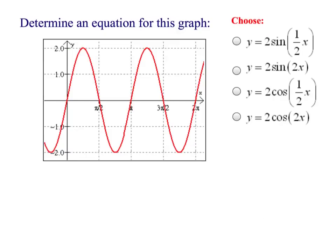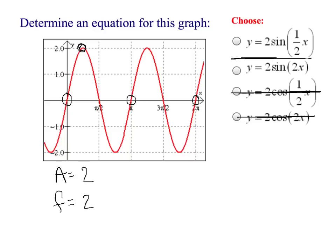In the second example, the curve starts right at the origin, so it has to be the sine function — we eliminate C and D instantly. The height is 2, so amplitude is 2. I see one cycle completed at pi and a second cycle at 2 pi, so frequency is 2 as well. That means I jump on choice B — amplitude and frequency are both 2.